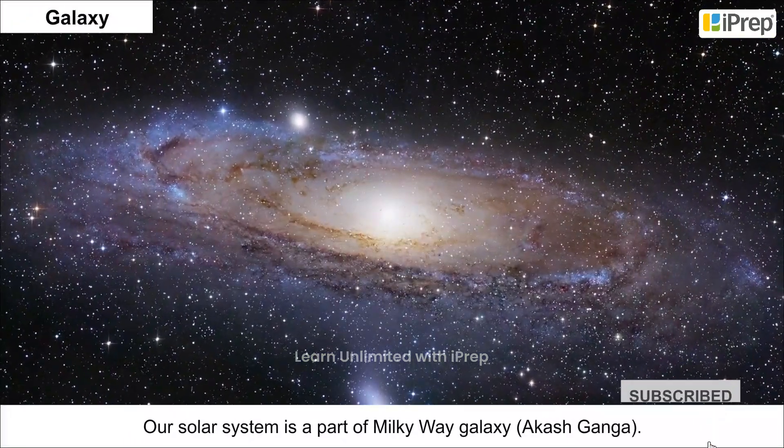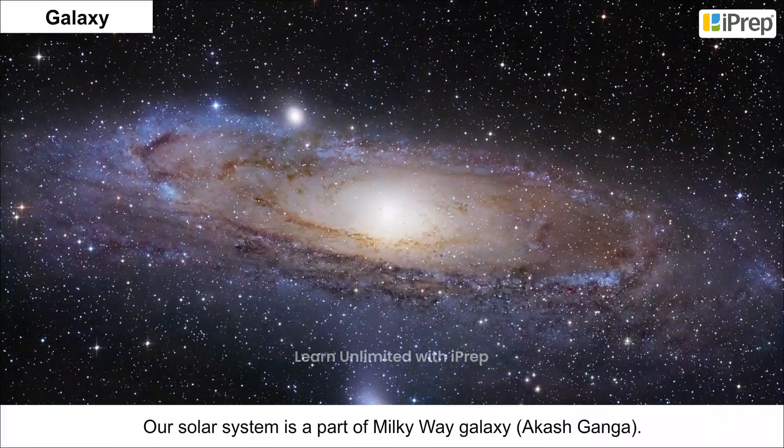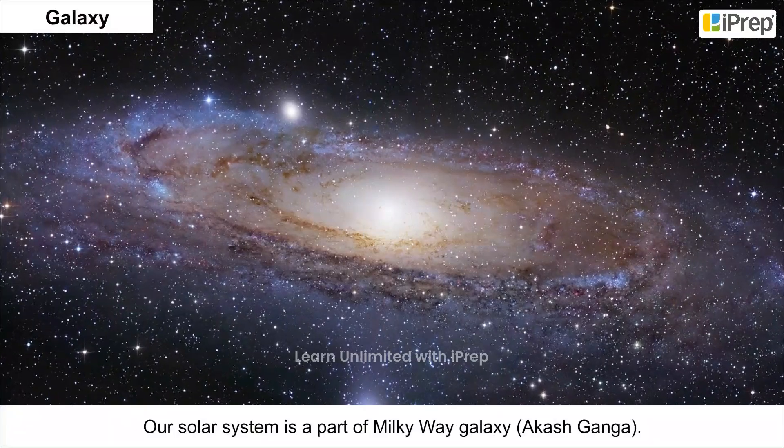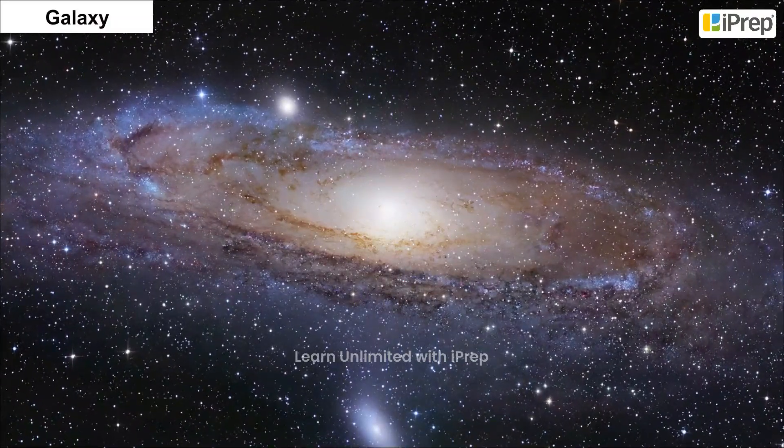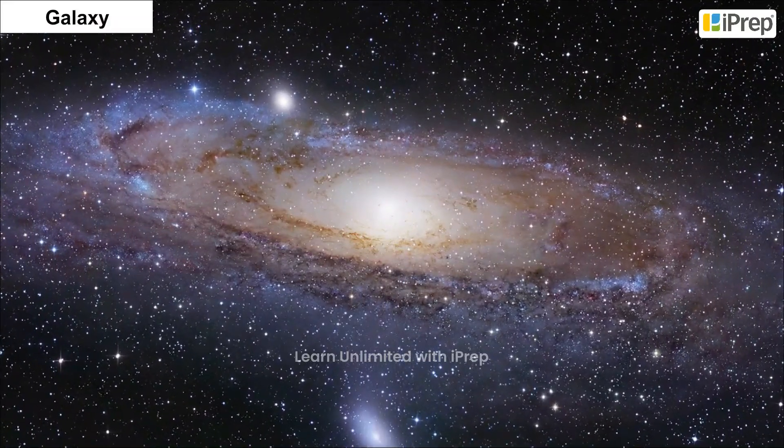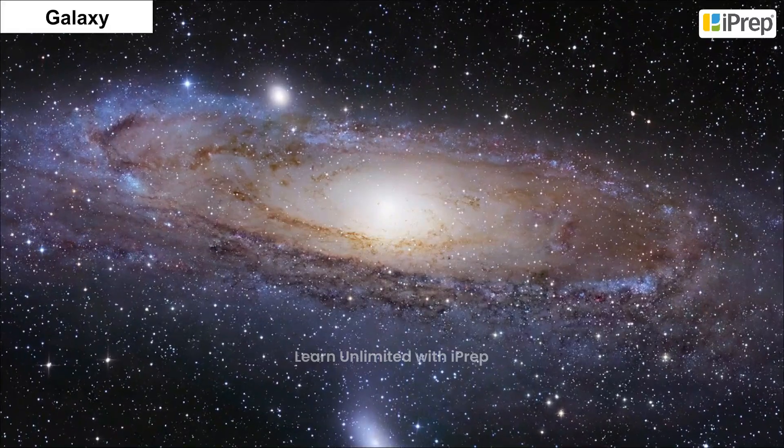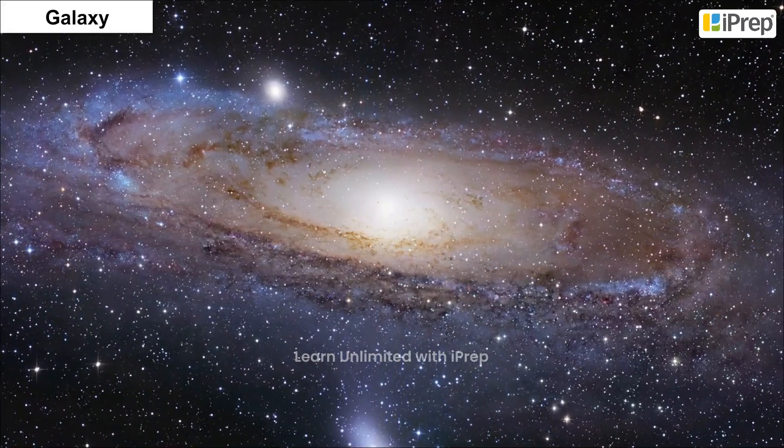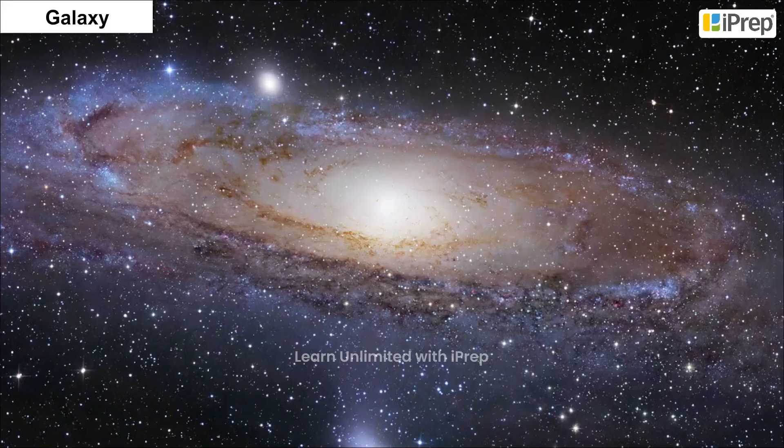Our solar system is a part of Milky Way Galaxy or Akash Ganga. A galaxy is a huge system of billions of stars, and clouds of dust and gases.